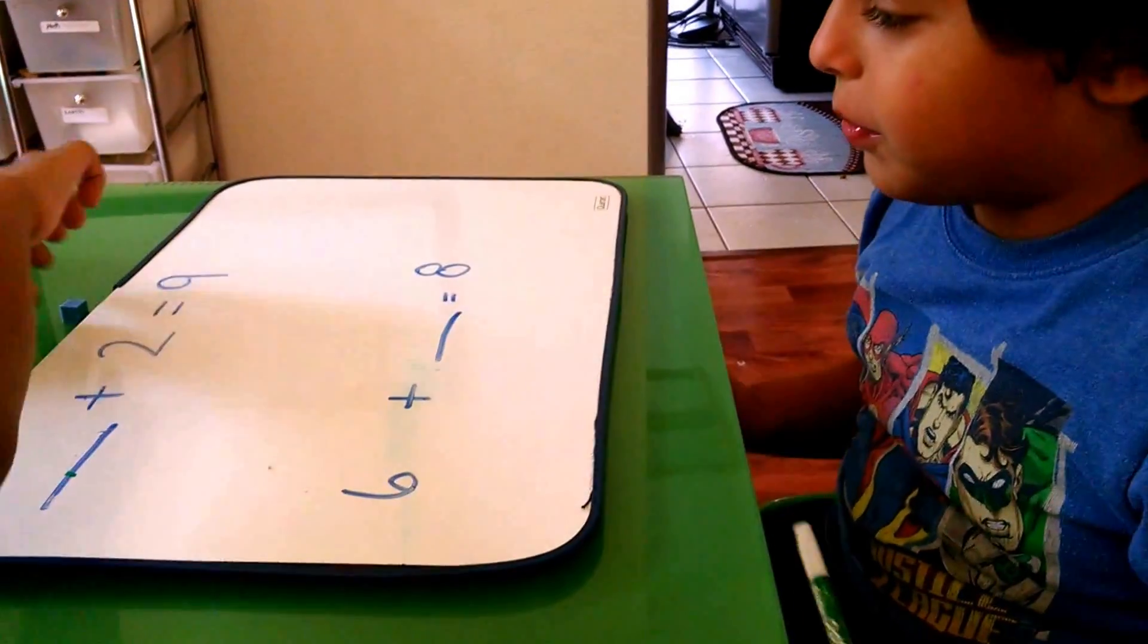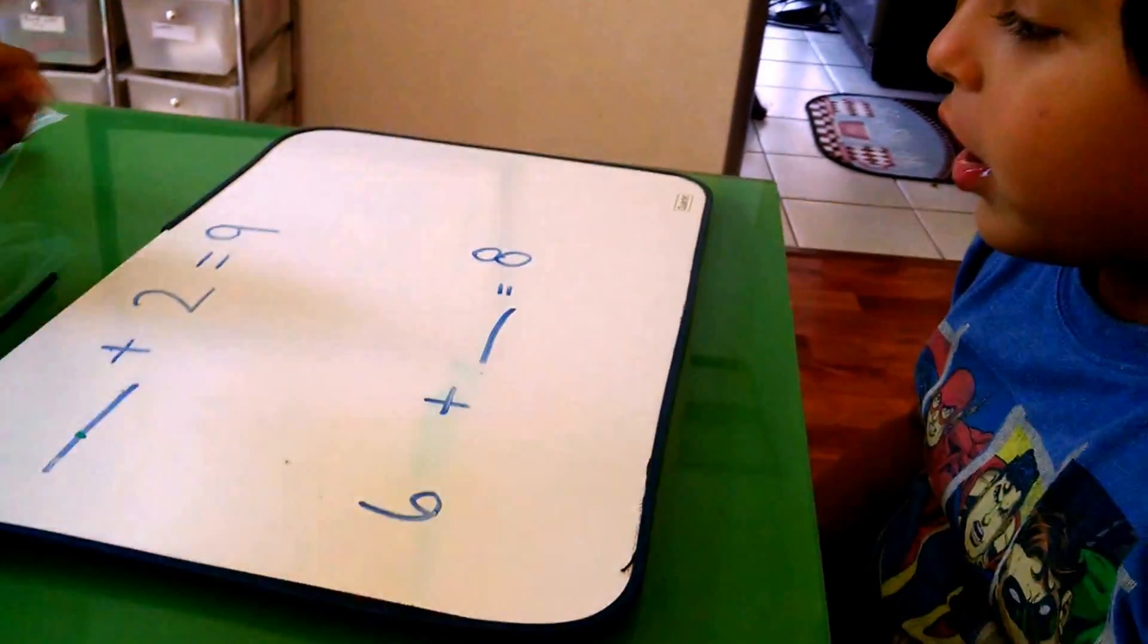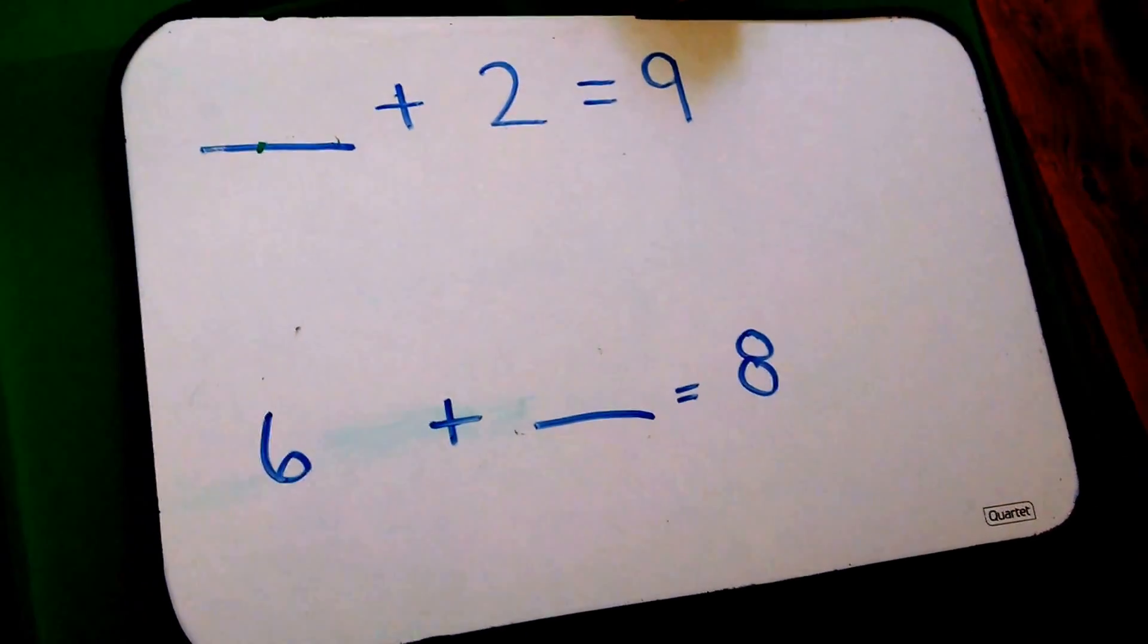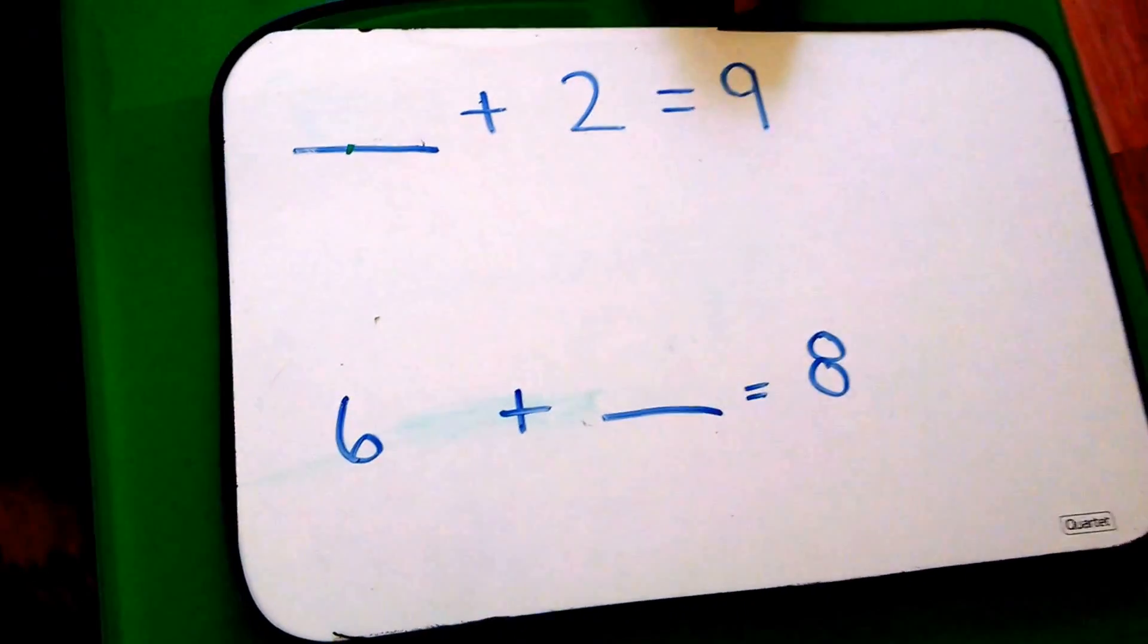Now we're doing a math problem. You have to get your marker and write it down. If you want to see, you can go close. Don't stand up, just sit.